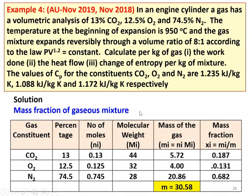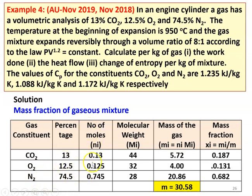Again we prepare the table for the mass fraction of the gaseous mixture as in the previous example. Columns: gas constituent, percentage, number of moles, molecular weight, mass of individual gases, and mass fraction. CO2 percentage is 13, O2 is 12.5, N2 is 74.5. Number of moles dividing by 100: 0.13, 0.125, 0.745.